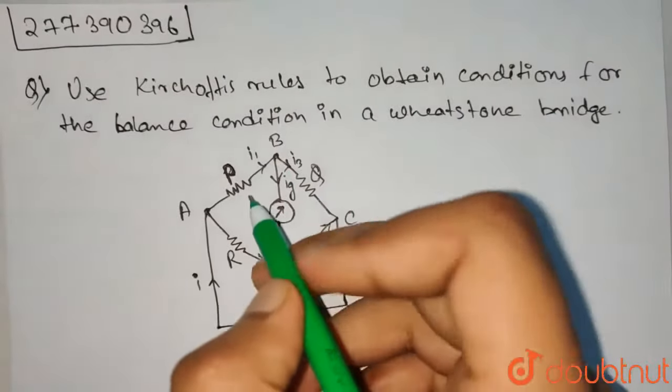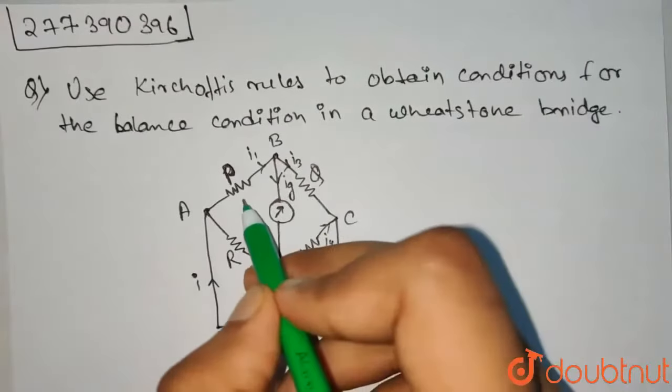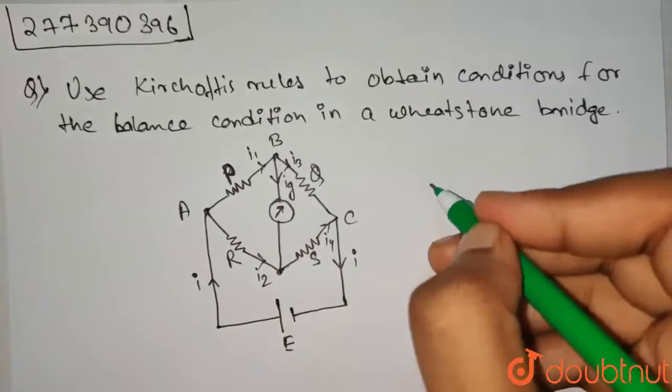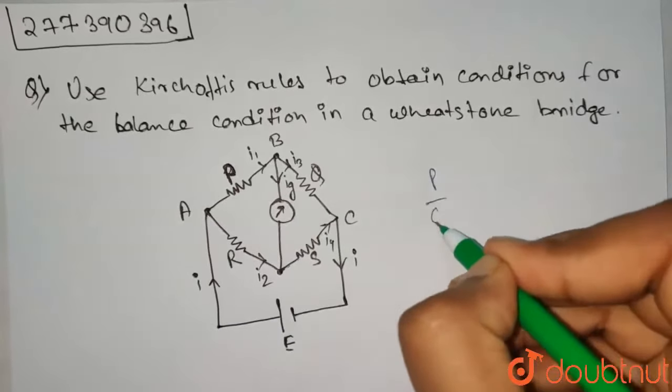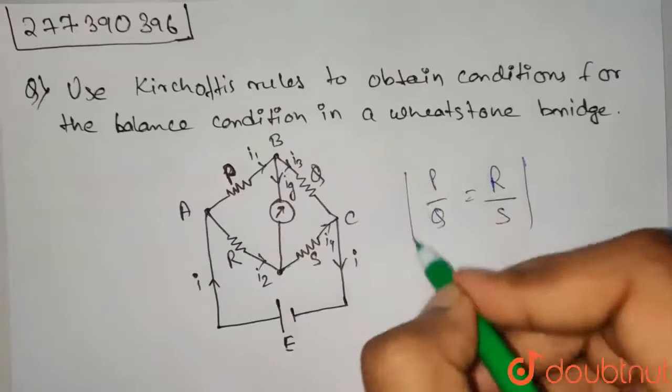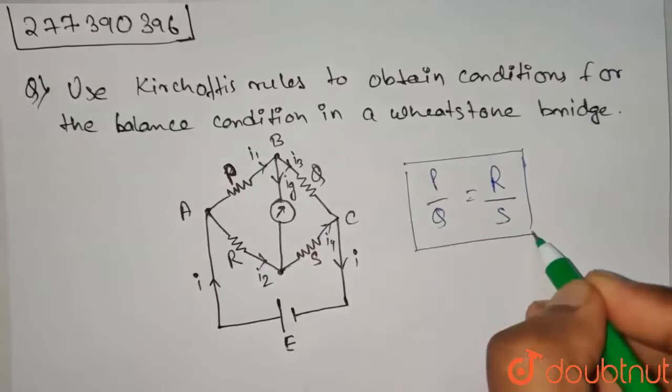A balanced condition in a Wheatstone bridge. This is a Wheatstone bridge. This is P, this is Q, this is R. These are the resistors. Now the balanced condition of Wheatstone bridge states that P by Q should be equal to R by S. This we have to prove.